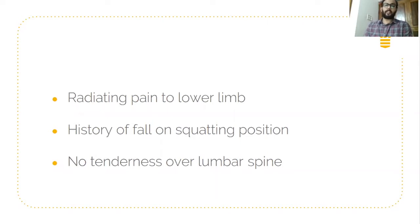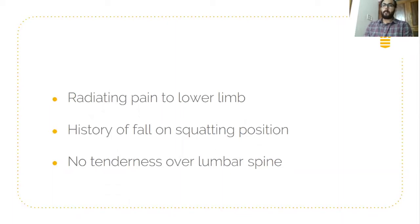The typical feature in piriformis syndrome is radiating pain towards the lower limb. There may be a history of fall in a squatting position previously, and there won't be any tenderness over the lumbar spine. This is the typical feature.